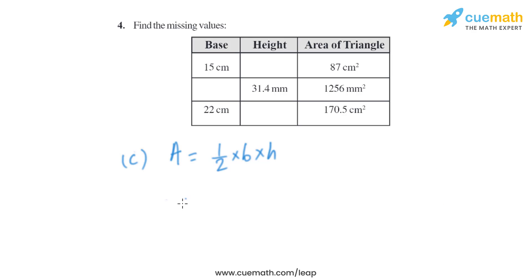Now let's move on to the third part. In the third part, the area of triangle is given, that is 170.5 square centimeter, and the base of the triangle is given, that is 22 centimeter. We have to find its height. So on solving it we will get 22H that will equal to 170.5 multiplied by 2, which is same as 341.